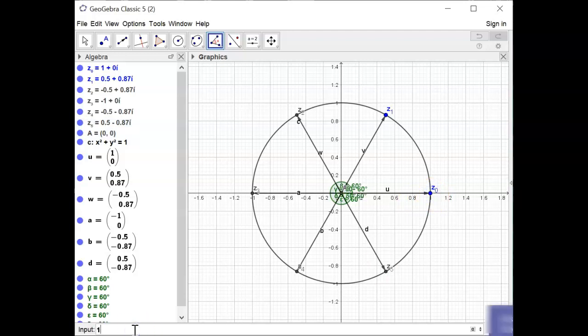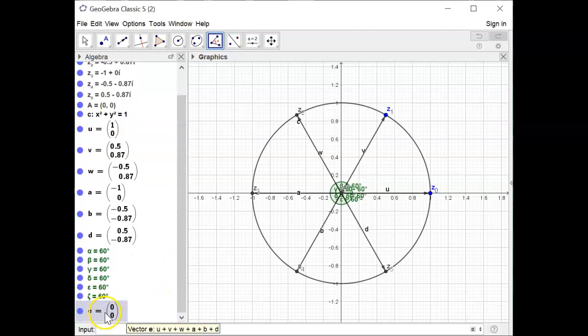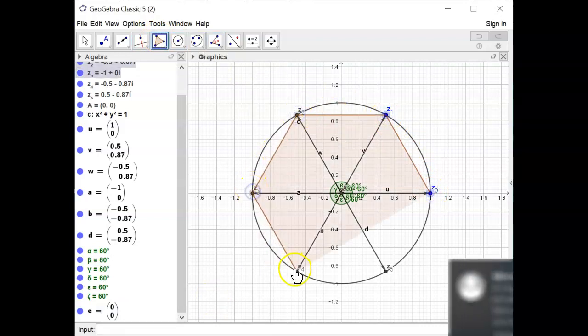If we look at adding the six vectors together, so u plus v plus w plus a plus b plus d, we'll notice that the resultant is the zero vector. In other words, that confirms that property that we had at the end of the last part of the video.